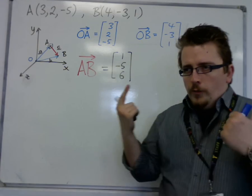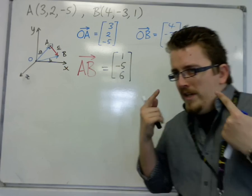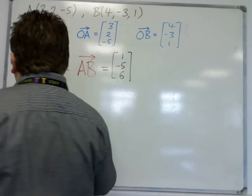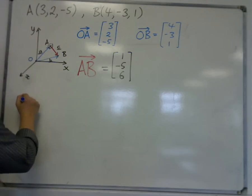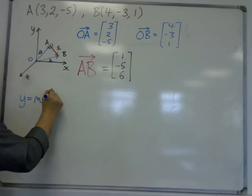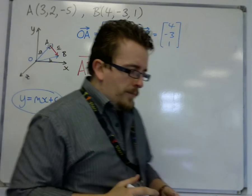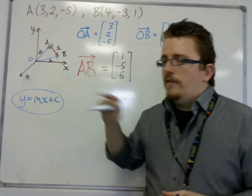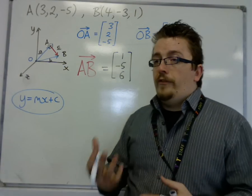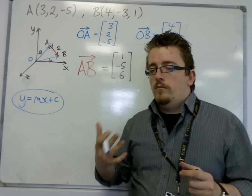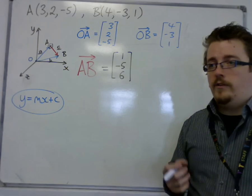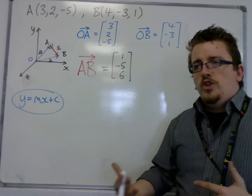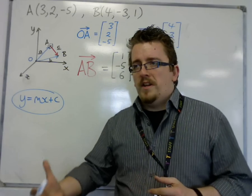So what do we know already about the equations of a straight line? In two dimensions we can look at y equals mx plus c, where m is the gradient of the line and c is the intercept with the y-axis. So how can we generalise that into three dimensions?